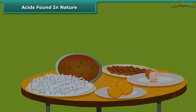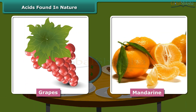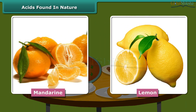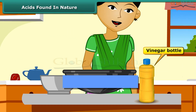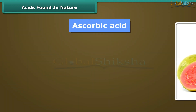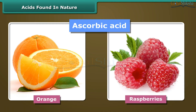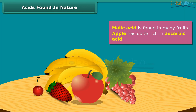Different food items contain different acids. Citrus fruits like orange, grapes, mandarin, lemon, etc. contain citric acid. Vinegar found in our kitchen is dilute acetic acid. Ascorbic acid is found in guava, orange, raspberries, etc.